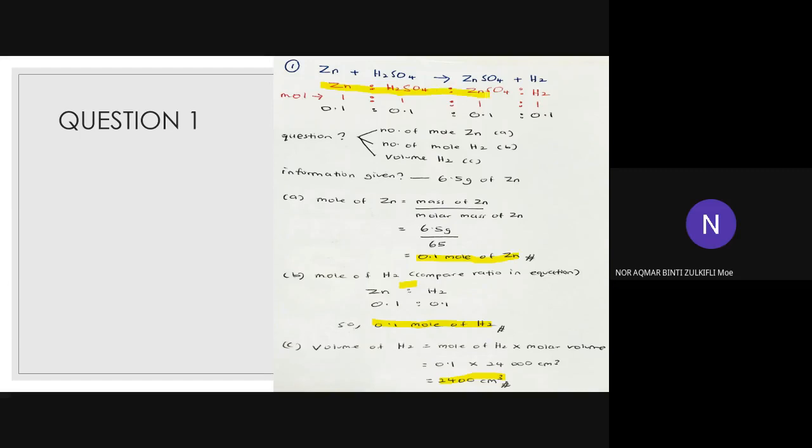For the first step you need to find the ratio — that makes it easier. You compare the moles here: all are 1. Why? Because you can see here: 1 mol of zinc reacts with 1 mol of H₂SO₄ to produce 1 mol of zinc sulfate and 1 mol of H₂. So the ratio is 1:1:1:1. For question 1 we need: number of moles of zinc, number of moles of H₂, then the volume of H₂.